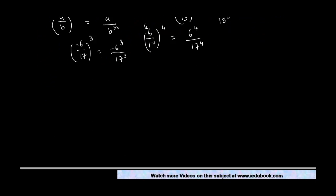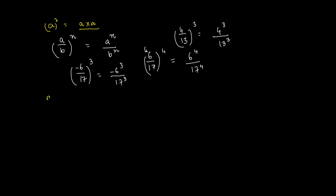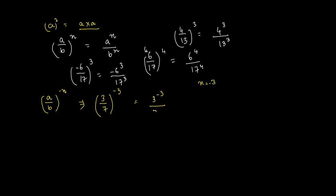Now let us see what happens when n is a negative integer. Let's take a upon b to the power minus n — for example, 3 upon 7 raised to the power minus 3. We know that a upon b to the power n equals a to the power n divided by b to the power n, so with n equal to minus 3 this becomes 3 to the power minus 3 divided by 7 to the power minus 3, or 3 to the power minus 3 into 1 upon 7 to the power minus 3.